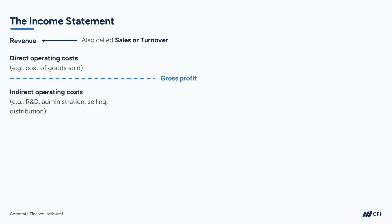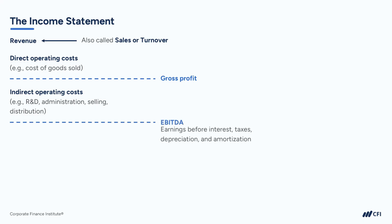If we take our revenues and then deduct both our direct operating costs and our indirect operating costs, we arrive at our next profit subtotal called EBITDA, or earnings before interest, taxes, depreciation, and amortization.